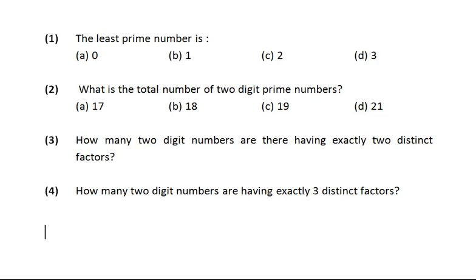Now, what's the first question here? We have been asked the least prime number. Friends, what is the least prime number? We know prime numbers: 2, 3, 5, 7. And what is the definition of prime number? Numbers which have two distinct factors—number 1 and the number itself. So which is the least prime number? It is 2.